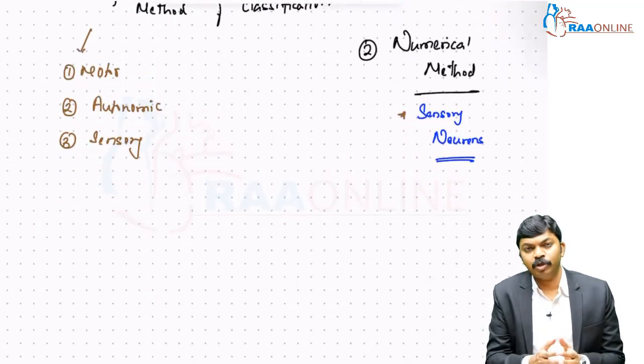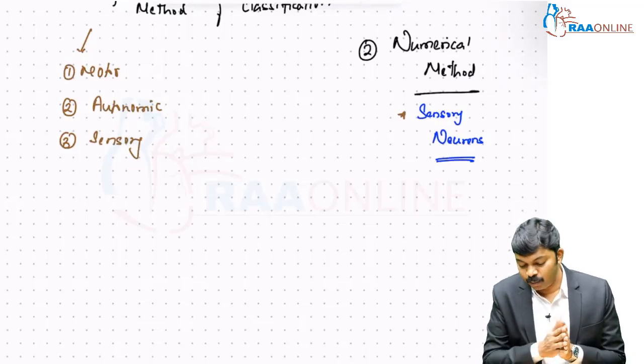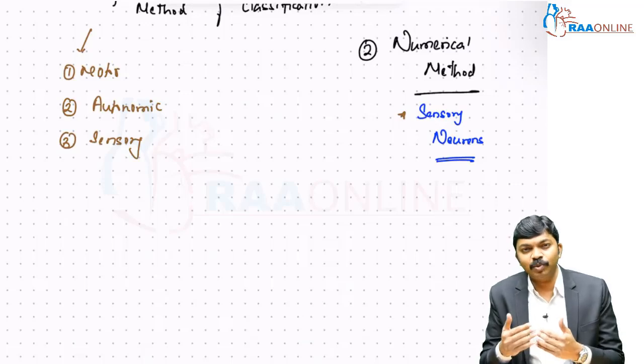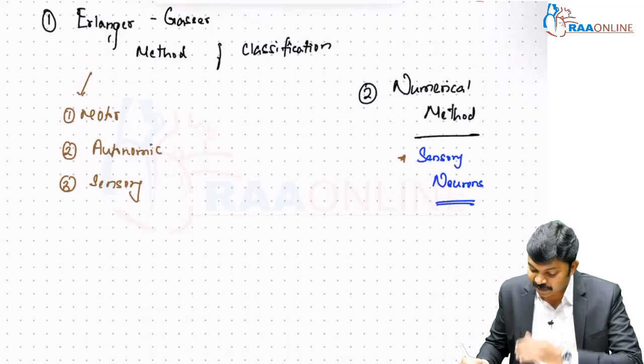Within the motor neurons we have different varieties which are involved in different functions. Within the autonomics and sensory we have different varieties involved in different functions. Now let's take up Erlanger-Gaser method of classification.